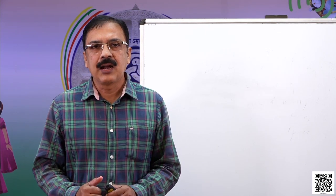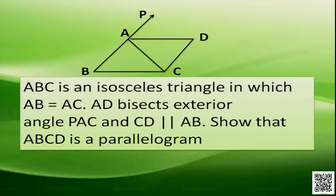Dear students, as we learned about the opposite sides being parallel and equal, we will now solve some problems based on this. Let us see the problem. ABC is an isosceles triangle in which AB equals AC. AD bisects exterior angle PAC, and CD is parallel to AB. Show that ABCD is a parallelogram.